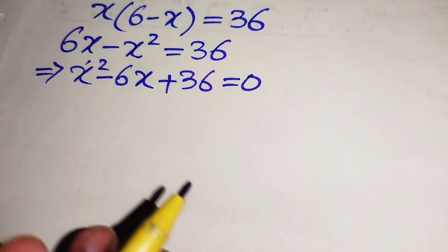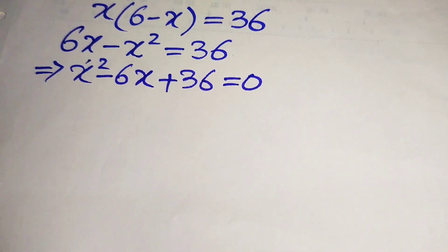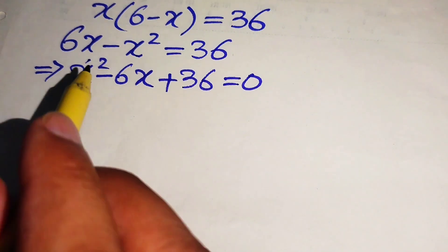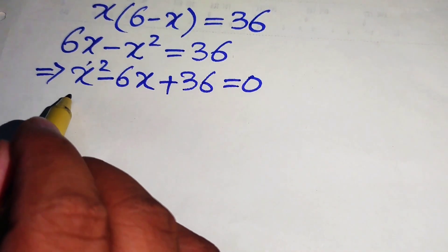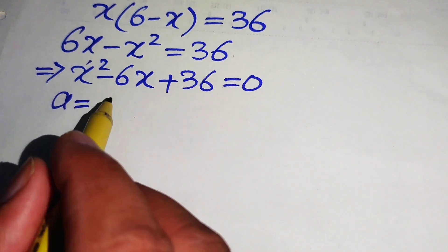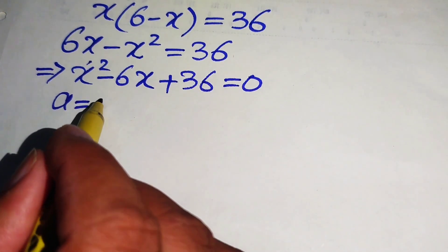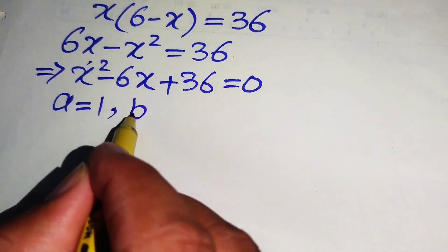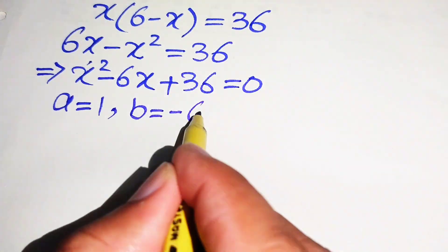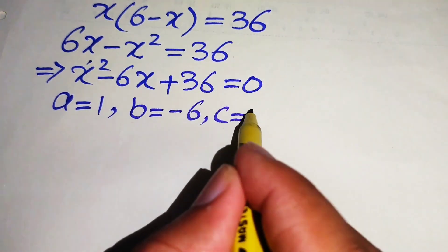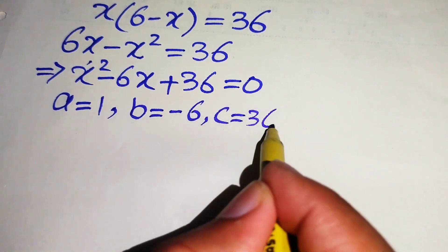Now we use the quadratic formula to solve this quadratic equation. We identify the coefficients: a equals 1, b equals minus 6, and c equals 36.